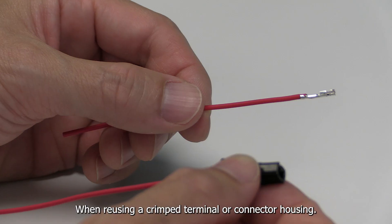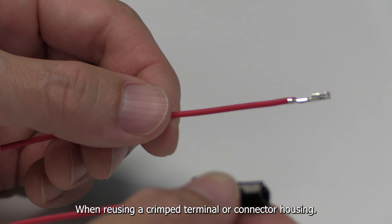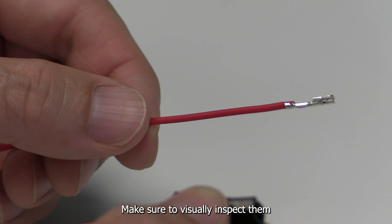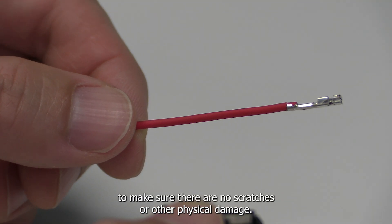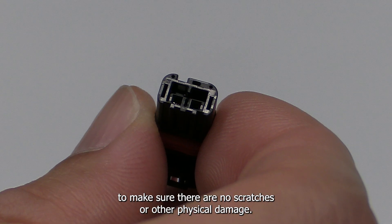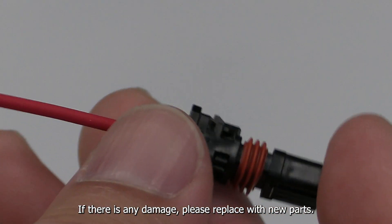When reusing a crimp terminal or connector housing, make sure to visually inspect them to make sure there are no scratches or other physical damage. If there is any damage, please replace with new parts.